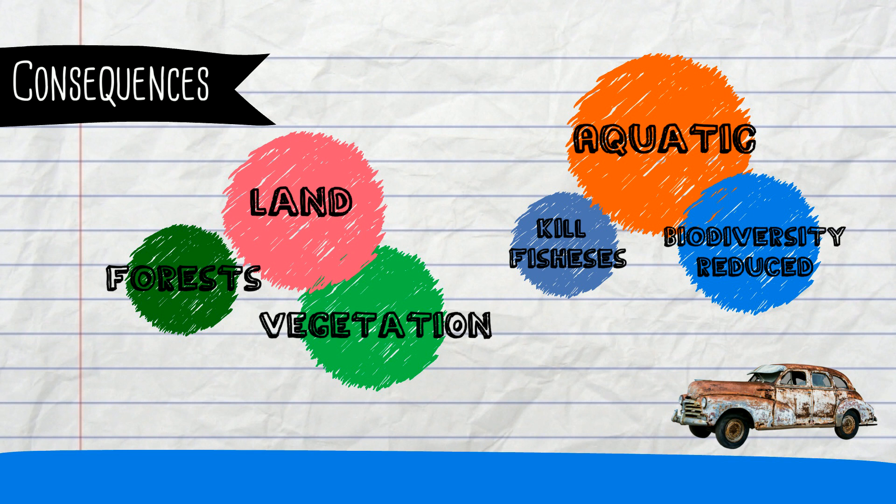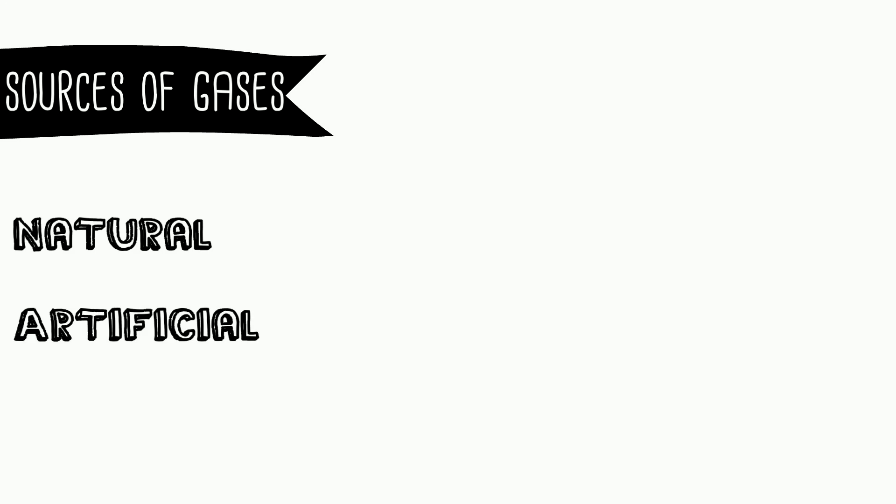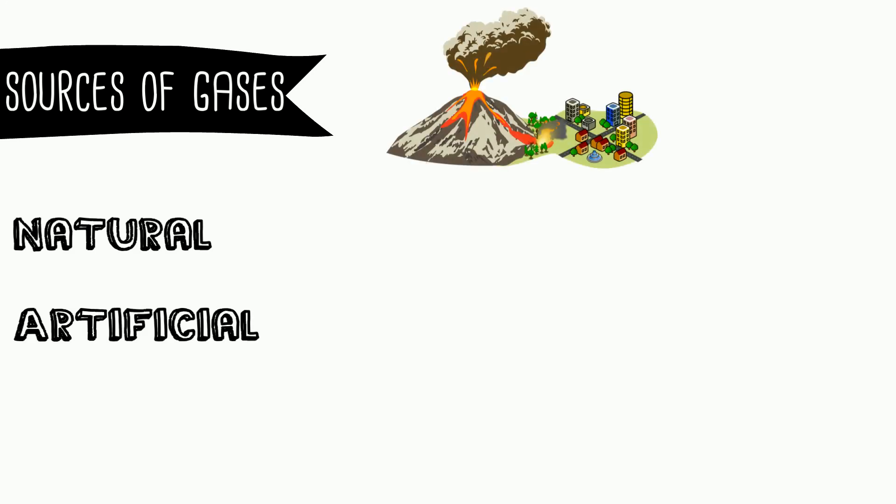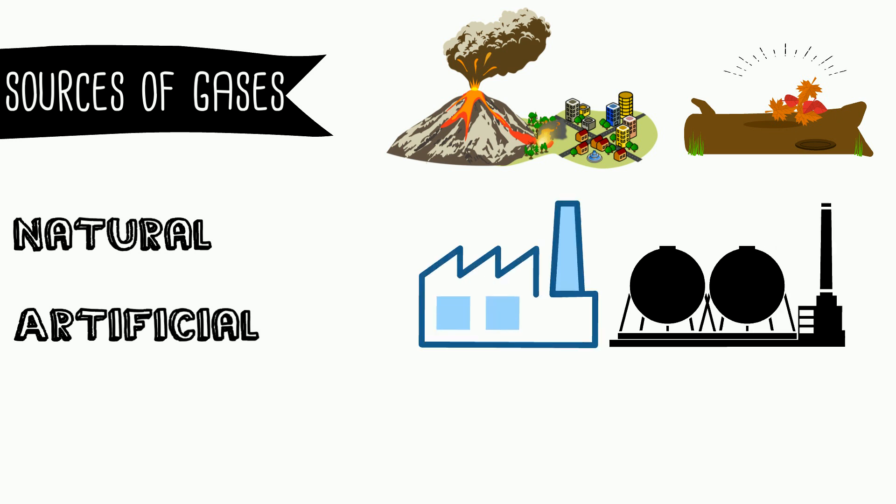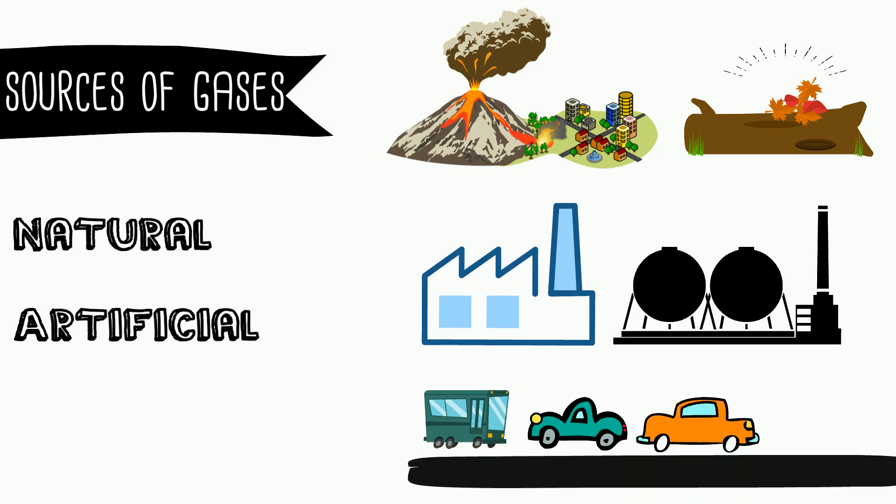Let's learn now the sources of the gases. There are two sources: natural and artificial. The natural sources usually are volcanoes and decomposition of organic material. The sources generated by human beings will be from fossil fuels, industries, and cars, or any vehicle that uses fuel.